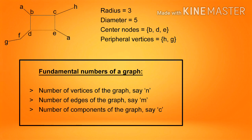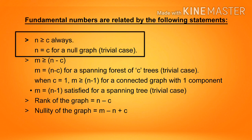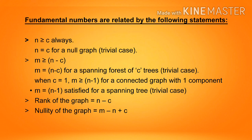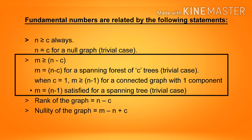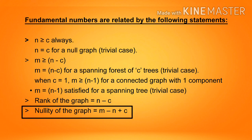Fundamental numbers of a graph: N (number of vertices), M (number of edges), C (number of components). These are related by: N ≥ C always; N = C for a null graph. M ≥ N − C; M = N − C for a spanning forest of C trees. When C = 1, M ≥ N − 1 for a connected graph; M = N − 1 for a spanning tree. Rank of the graph = N − C. Nullity of the graph = M − N + C.